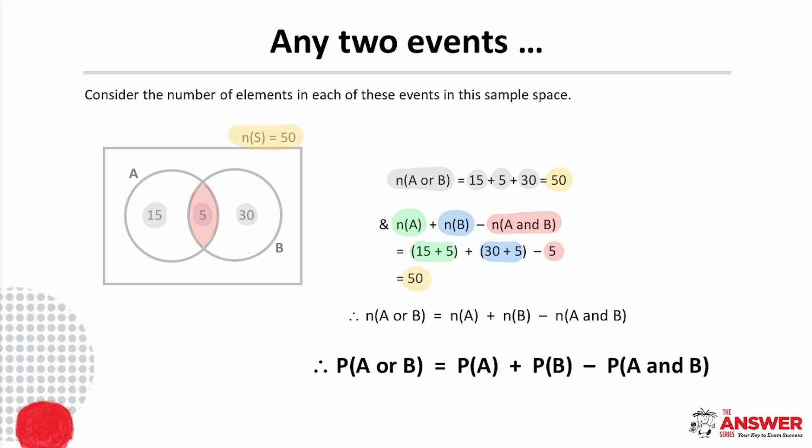And by dividing through by the total number in the sample space, in other words by applying the definition of probability, it can be concluded that for any two events the probability of A or B equals the probability of A plus the probability of B minus the probability of A and B.